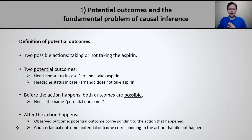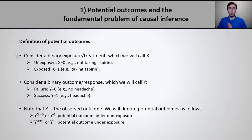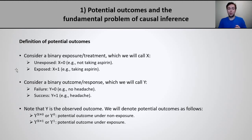For the purposes of our course, we will only consider a binary exposure or treatment variable, which we will call x. x equals 0 corresponds to the unexposed status, and x equals 1 corresponds to the exposed status. So, for example, if exposure is taking aspirin, then taking aspirin corresponds to x equals 1, and not taking aspirin corresponds to x equals 0. Let us also consider a binary outcome or response variable, which we will call y. To denote outcome failure we will use y equals 0, and to denote outcome success we will use y equals 1.